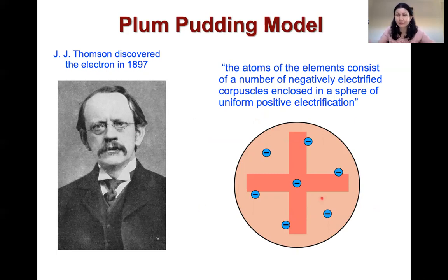But initially when the atom was visualized, it was thought about that the atoms of the elements consist of a number of these negatively electrified particles, and they were enclosed in some kind of sphere which had a uniform positive charge. So this is how an atom was initially visualized.